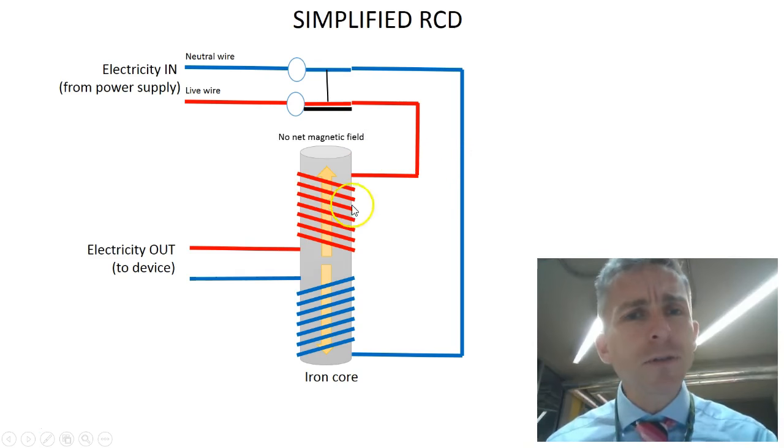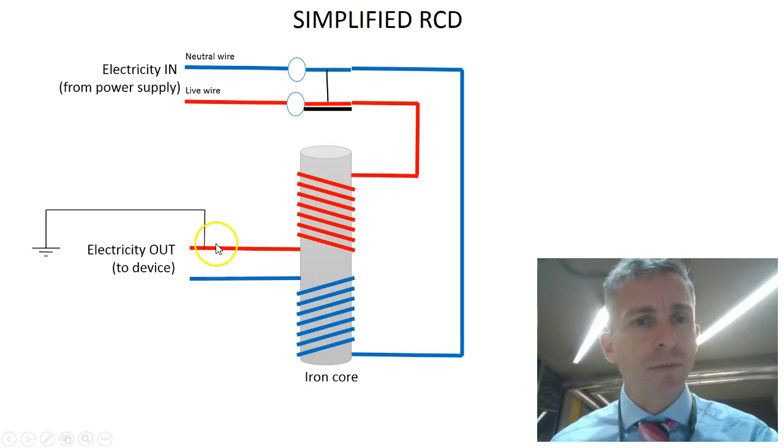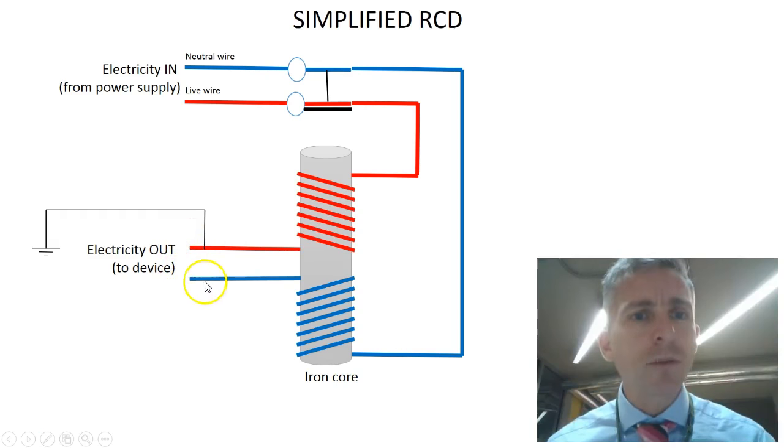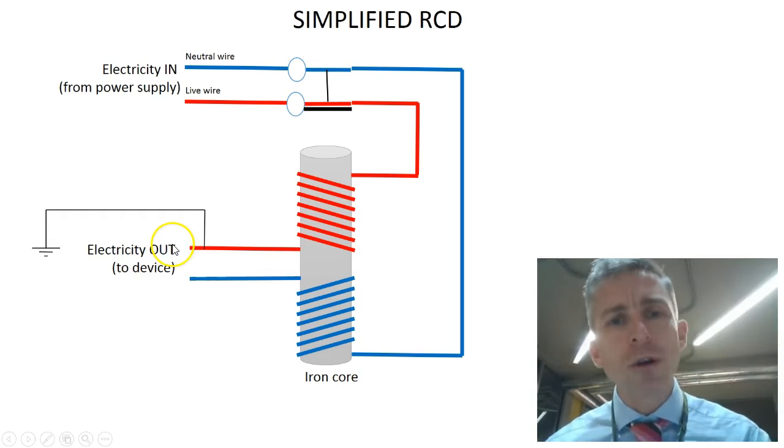However, if there's a fault in an appliance, sometimes the electricity can leak away to the ground. So instead of going through the appliance and back down the neutral wire, some electricity leaks away to ground. And this can happen if you cut through an electric cable, perhaps with a power tool.